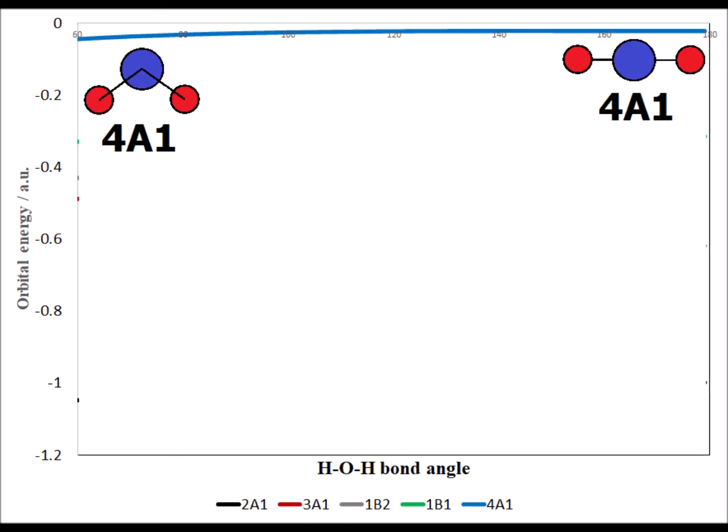The virtual orbital 4A1 is completely anti-bonding, different colors here represent different phases, and its energy barely changes going from bent to linear.